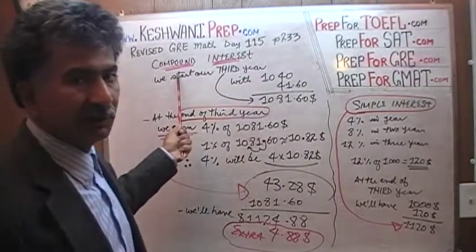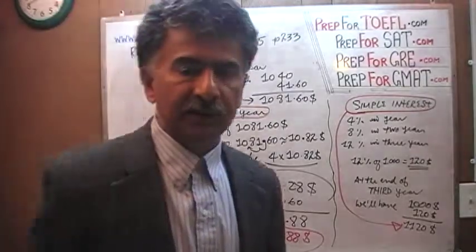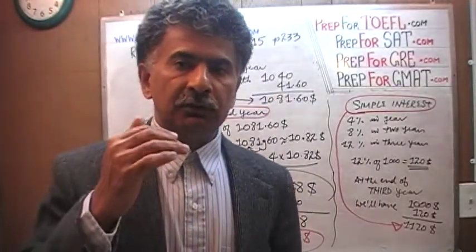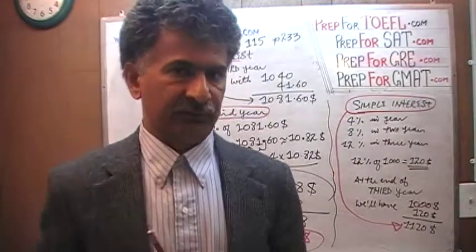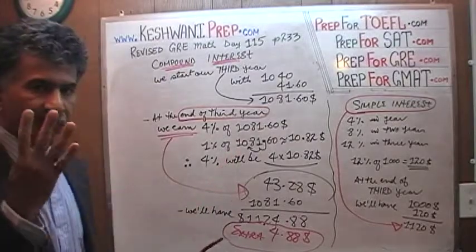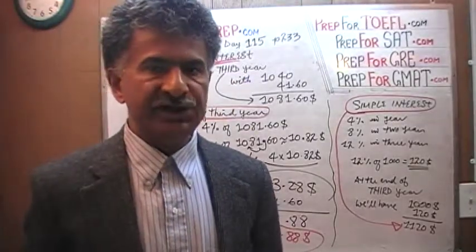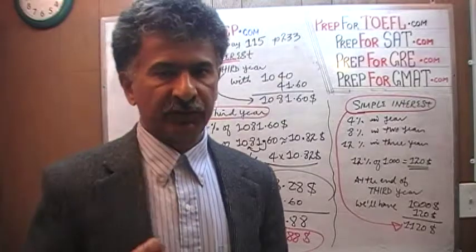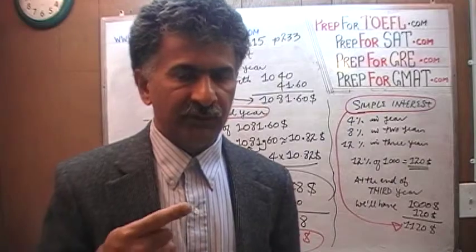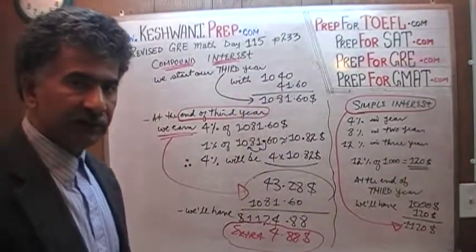This is dealing with the concept of compound interest. Now what happened yesterday was we learned how to figure out compound interest through step-by-step process. What happened in yesterday's problem was we had invested $1,000 for a period of 3 years and each year we were given 4% interest. And what we found is that through compounding, because of the compounding effect, what we found is that at the end of 3 years...